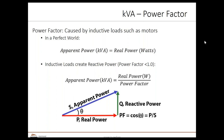Let me use a beer analogy to explain. Think of a mug of beer — the mug, the beer, and the foam. The mug capacity represents apparent power, which is kVA. The beer itself represents active power, which is kW. The foam represents reactive power, which is kVAR. Power factor is the ratio between the active power (kW) and the apparent power (kVA). Using the beer analogy, you get the power factor by dividing the beer by the mug capacity — and it's clear you're getting less beer than you're paying for, with all that foam taking up space.